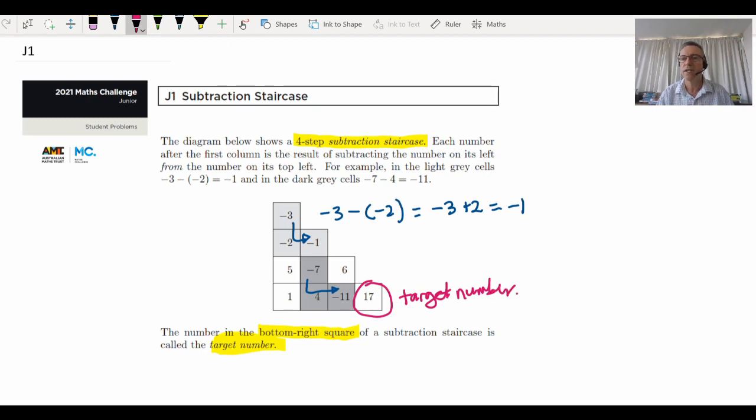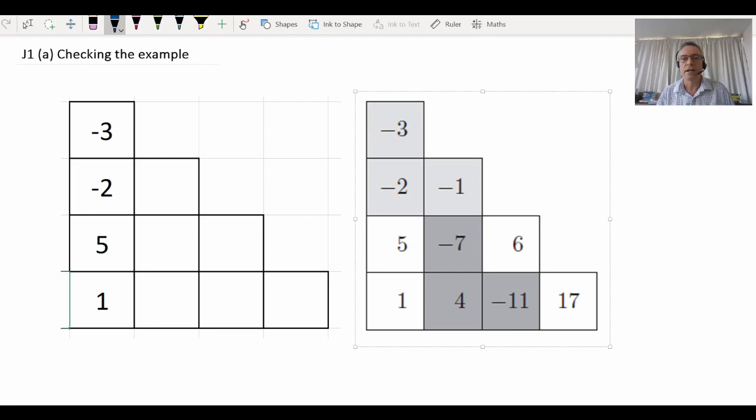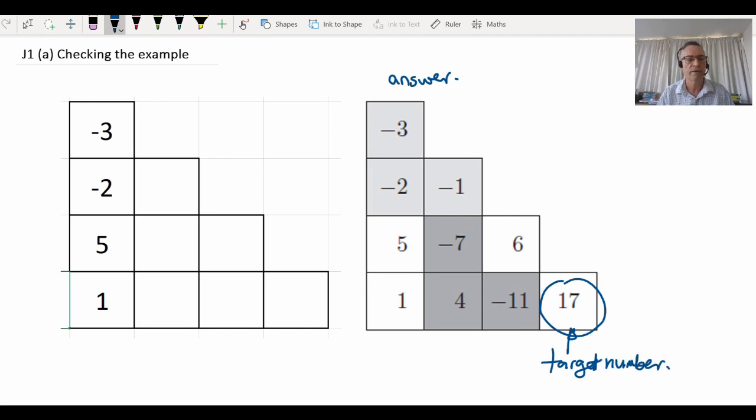Before we proceed with the problem, we really should check that we can generate their subtraction staircase from the example. So here is the answer that was provided in the example. Remember, that's called the target number. The idea is, can we start with the first column, generate all these numbers, and come up with the same target number? Let's try it carefully. Negative three subtract negative two, that's actually negative three plus two, so that is negative one. Negative two take away five is negative seven. Five take away one is four.